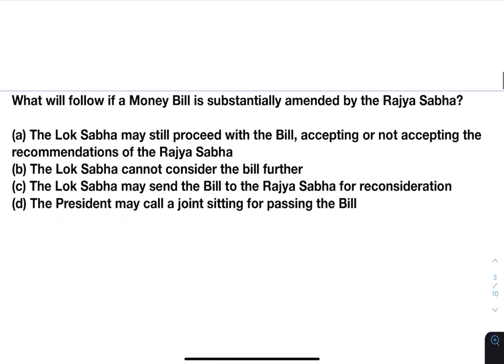Next: what will follow if a money bill is substantially amended by the Rajya Sabha? About money bills — a money bill can only be introduced in Lok Sabha. Rajya Sabha can suggest amendments, can give its suggestions, but it cannot amend it. Rajya Sabha can hold a money bill for 14 days, and after that Lok Sabha has the power to pass it. Options: the Lok Sabha may still proceed with the bill accepting or not accepting the recommendations of the Rajya Sabha.